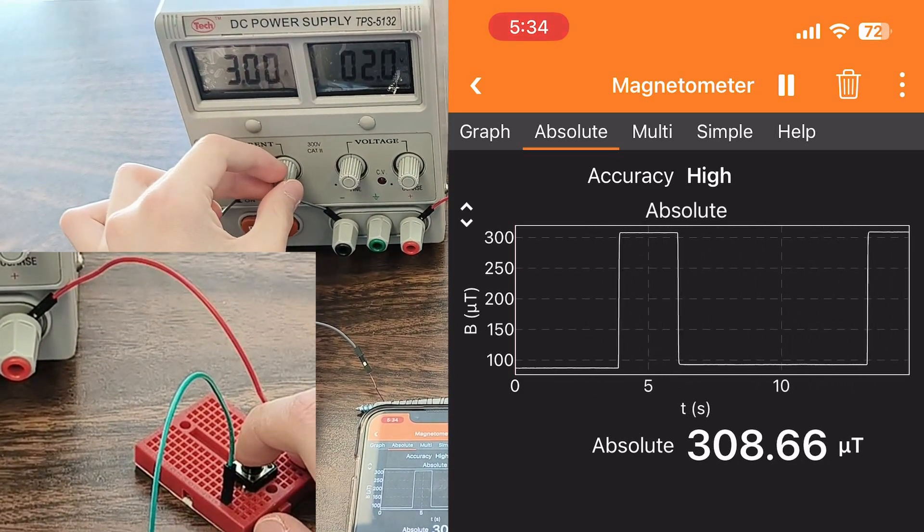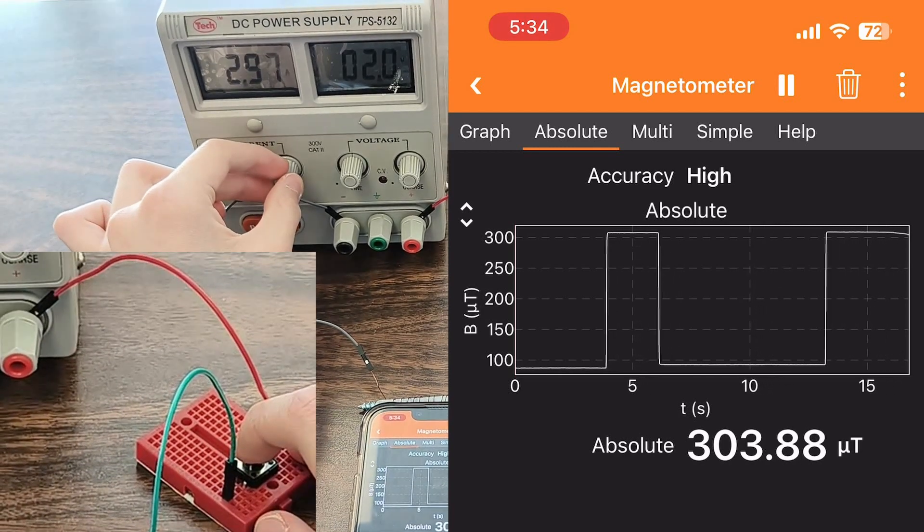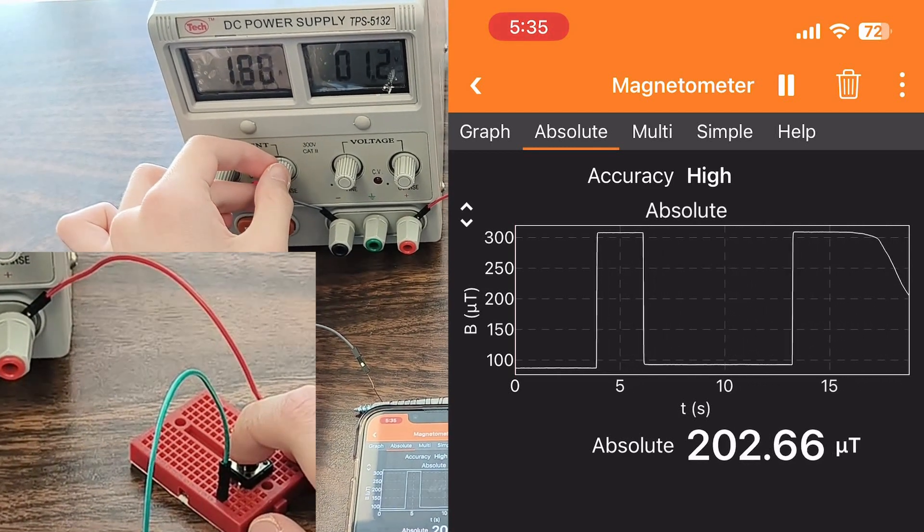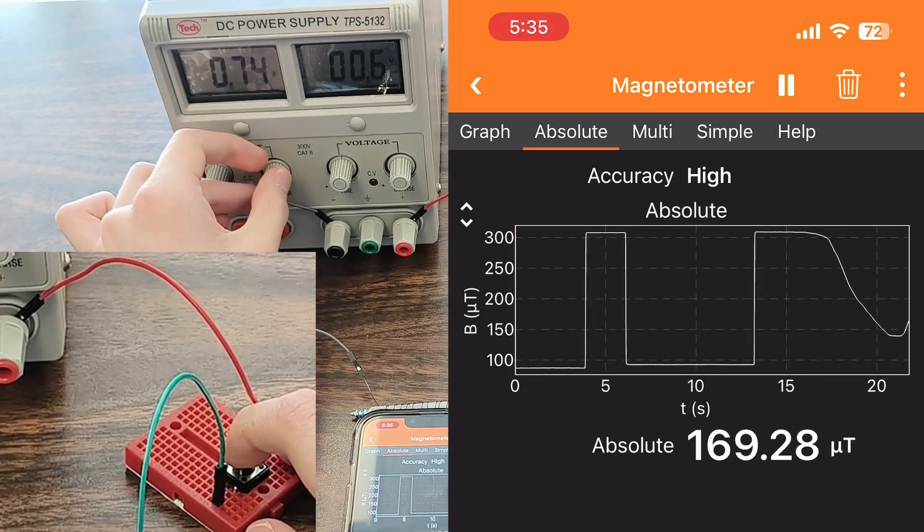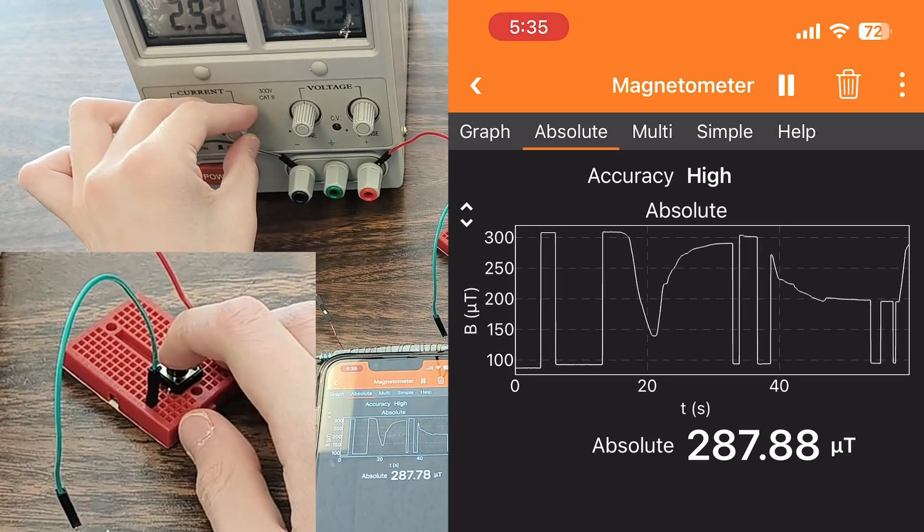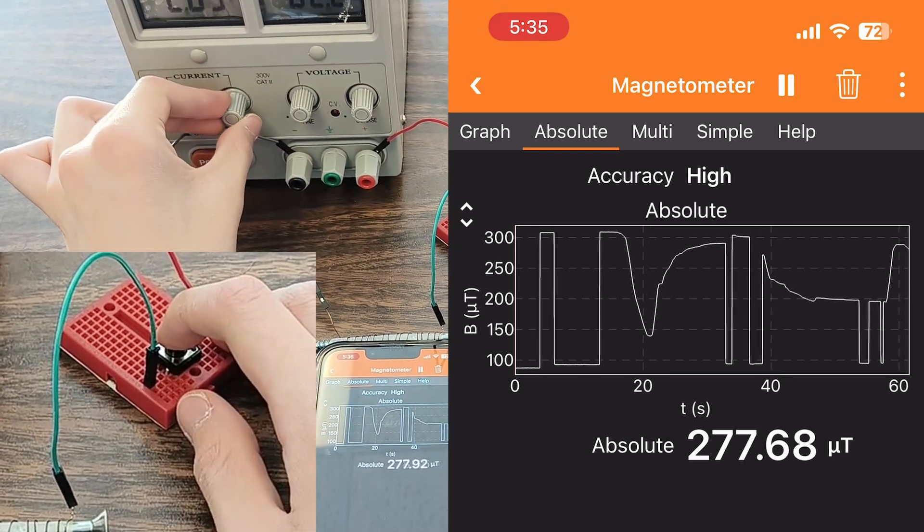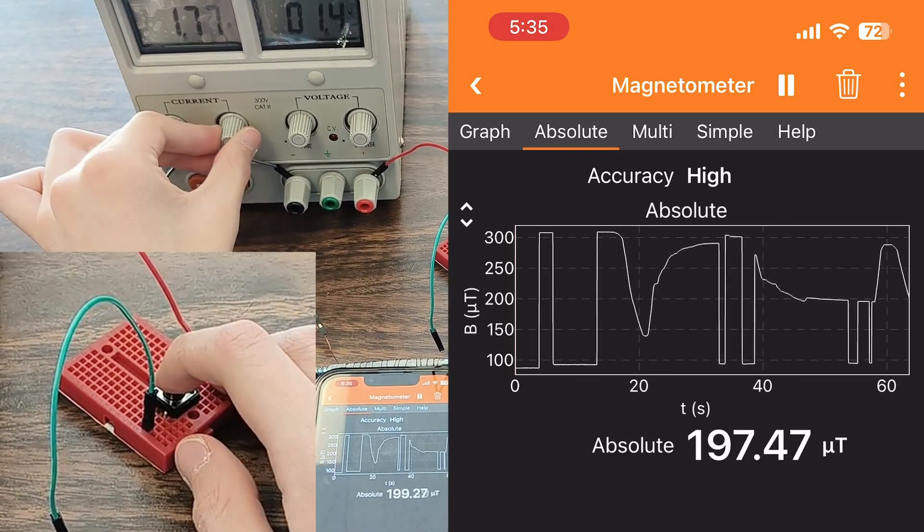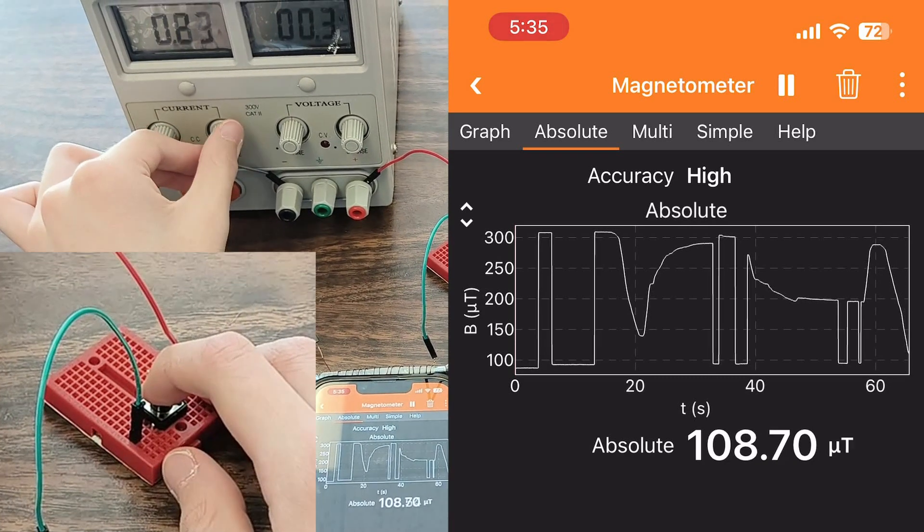As the button is held down, turning the current knob on the DC power supply also results in the changed reading. Turning it down decreases the magnetic flux density, as expected. Turning the knob at a constant rate changes the magnetic flux density linearly, or so it seems.